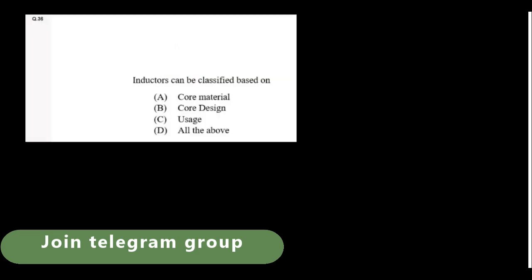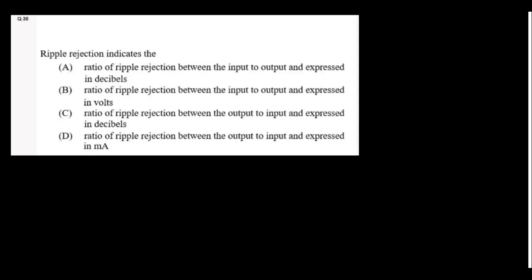Inductors can be classified based on core material, core design, usage—all the above. In summing amplifier, which of the case are true? It is an amplifier, so we can increase the output or decrease the output or we can make it equal. So all the above is the answer. Ripple rejection indicates the ratio of ripple rejection between the output to input expressed in decibels. Option C is the right answer. It is expressed in decibels only.